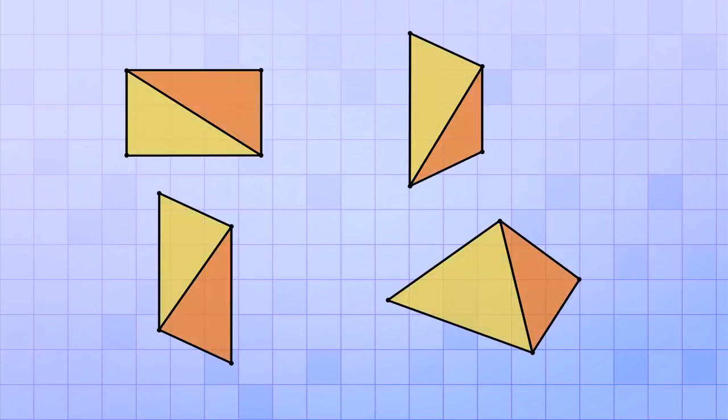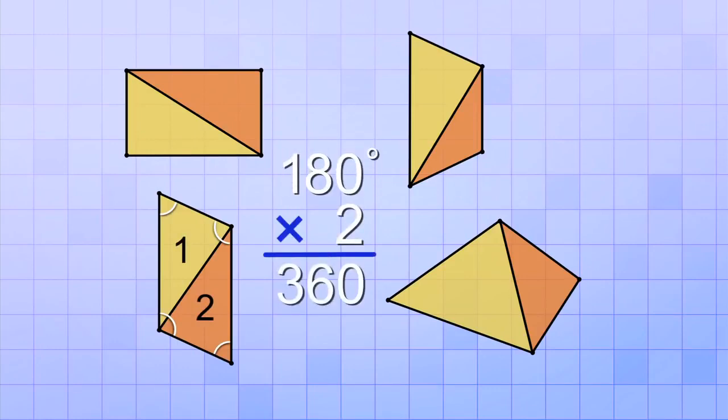In the triangles video, we learned that the sum of the angles of a triangle is always 180 degrees. So it's not too hard to see that since the angles of a quadrilateral form two triangles, the sum of those angles would be 2 times 180 degrees, which is 360.